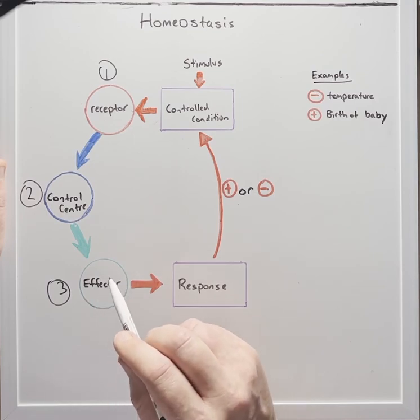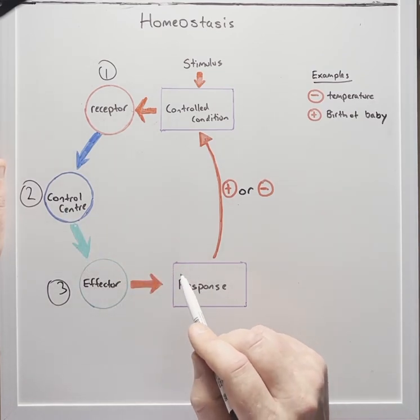The effector is a structure that receives the signal from the control centre and then produces a response.